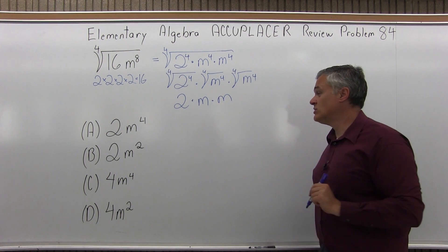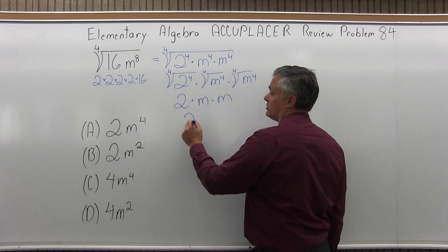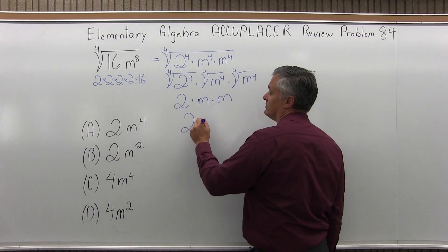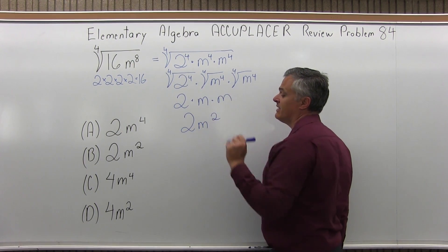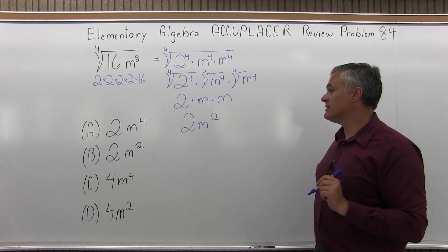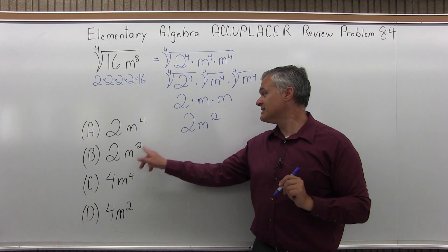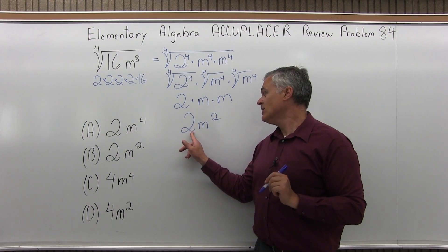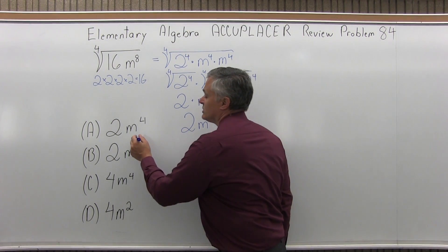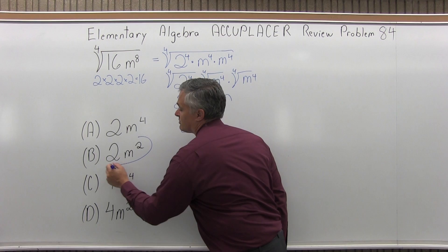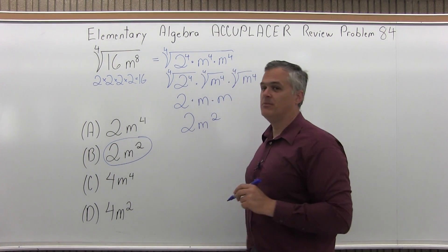So I have 2 times m times m, and I can simplify that as 2m squared, or 2m to the second. As I look at my list of options, option B is exactly 2m to the second — the same answer that I got. So the answer for this problem is option B.